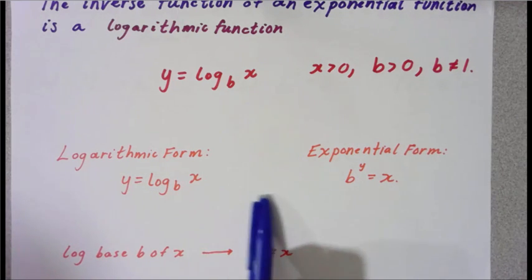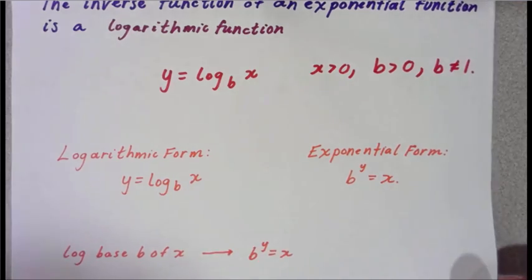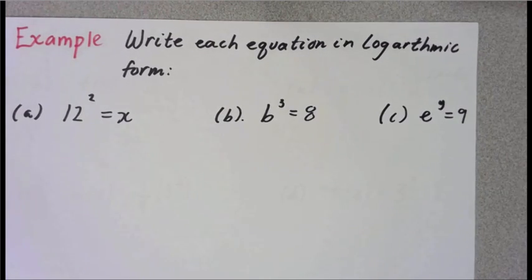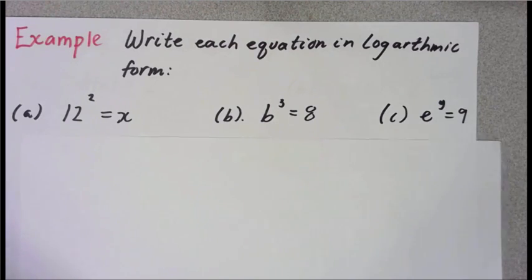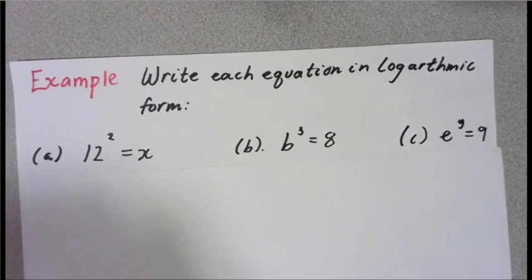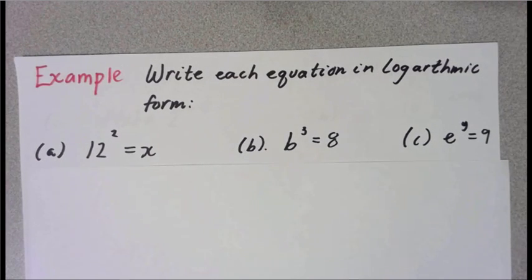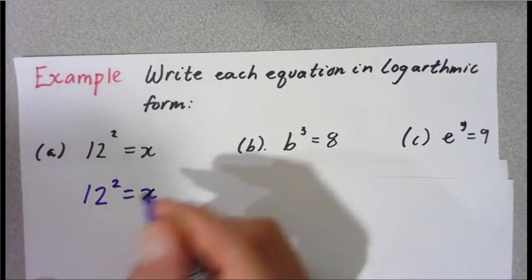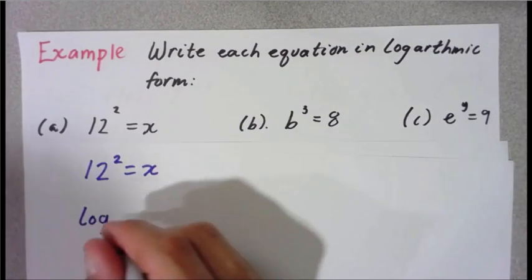This is what we're going to use today to help us rewrite exponential equations in logarithmic form — their inverse form. Let's look at some examples. You're probably going to see both numbers and variables. Notice how we have 12 squared equals x in the first example. My logarithm is going to be the same base as my exponential, which is 12 — so log base 12.